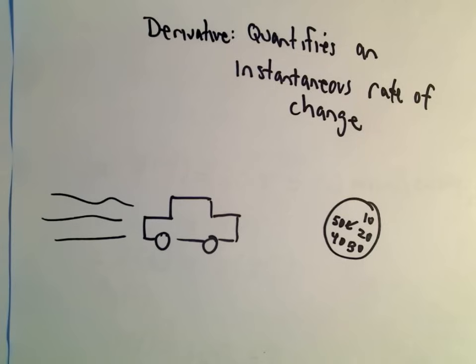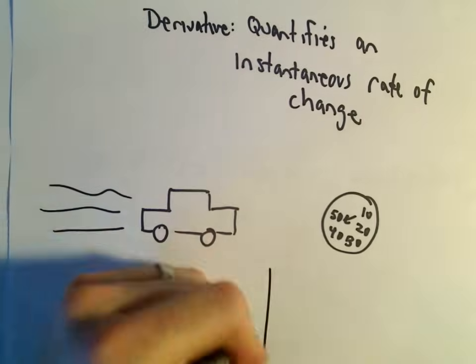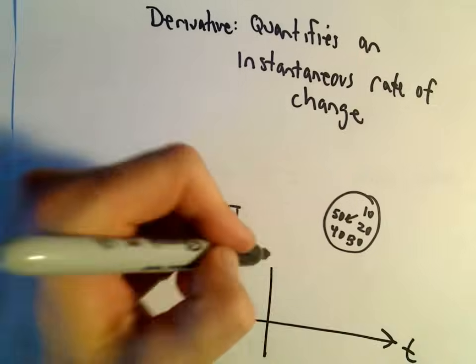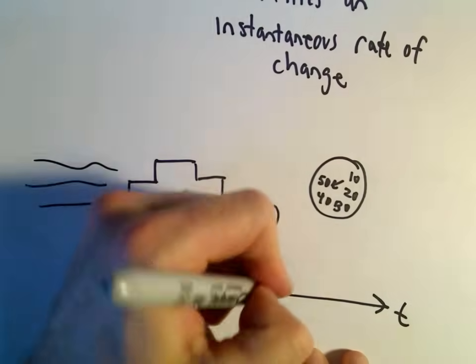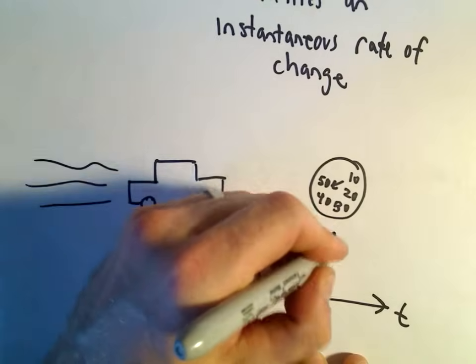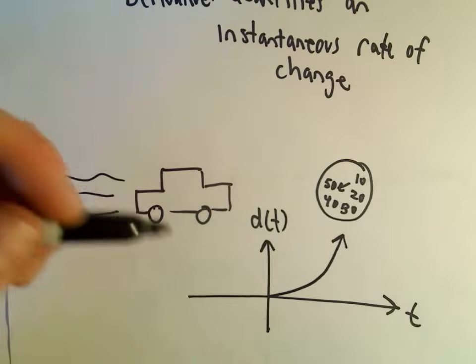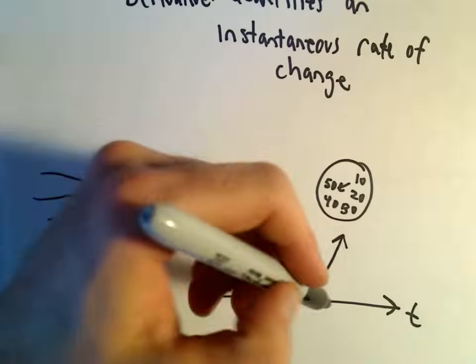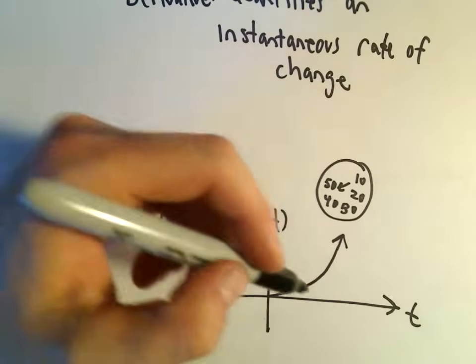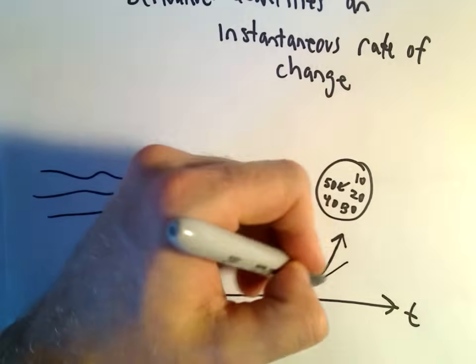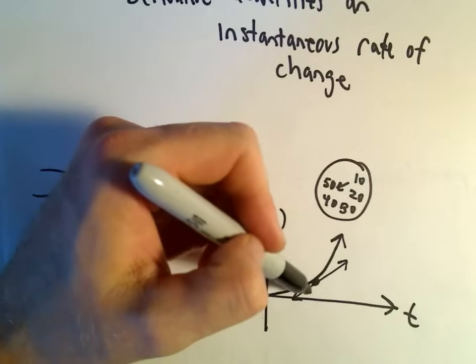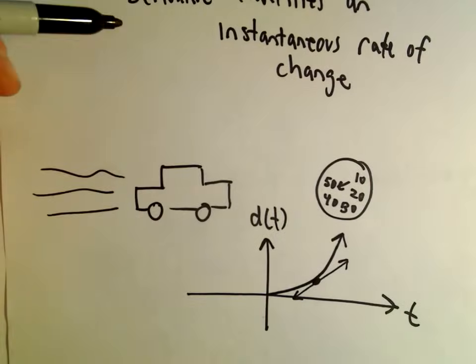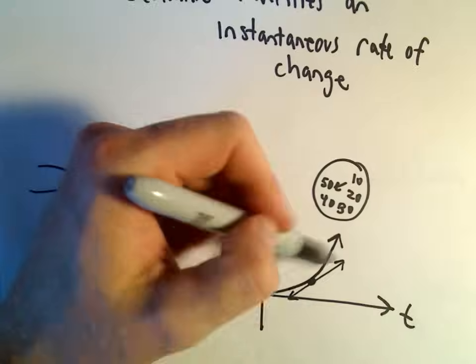So, again, if you have a function that tells you, so maybe this is time t and this is your distance maybe from home. Okay, so maybe your distance, maybe you're speeding up because you want to get away from home really quick for some reason. Maybe you got a hot date. The idea is if you calculate the slope of that tangent line, it's going to calculate the instantaneous rate of change. Or, again, it's going to tell you, the slope of this line is going to tell you the velocity.